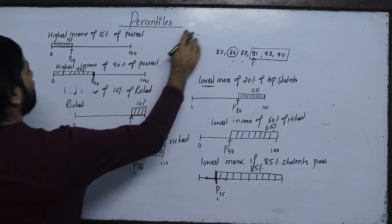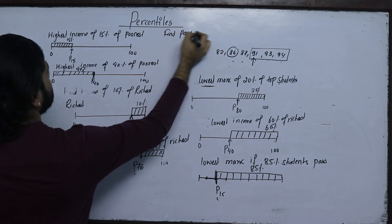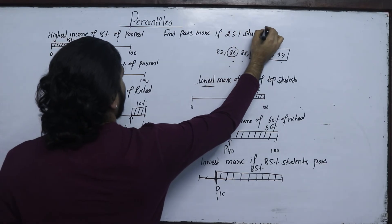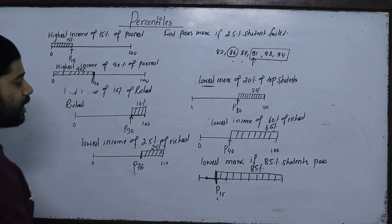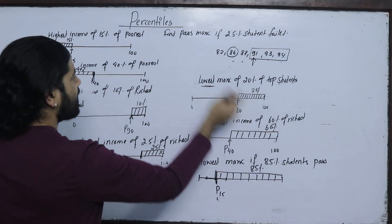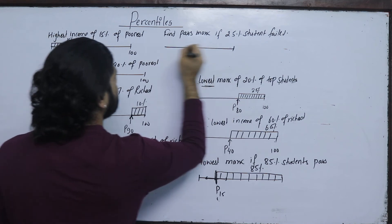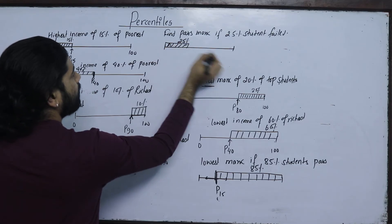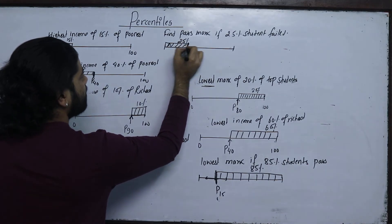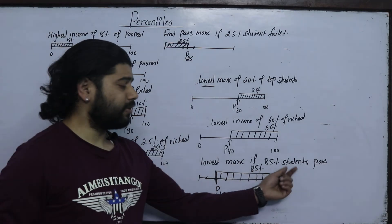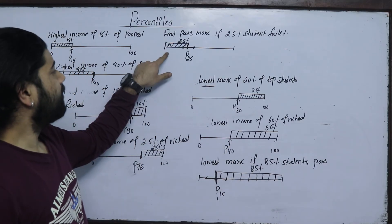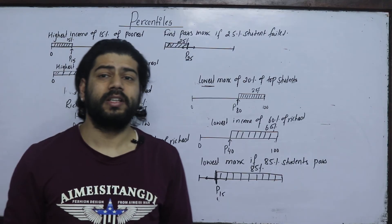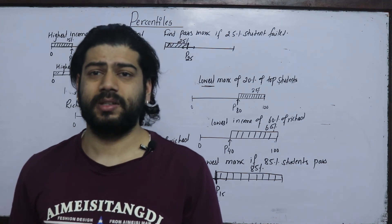Another last question: find pass marks if 25% of students fail the exam. 25% students fail. Now find the lowest marks if 85% students fail. 25% fail — how many marks will fail? Pass marks: find pass marks, and then fail, P25. If we have to move this, it is a straight pass. Then we have to move this to the lowest side. If we can solve this question, we will not have to solve this percentile. Next class we will solve this. This is a related question.